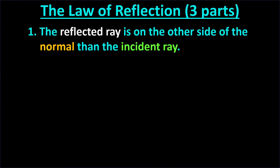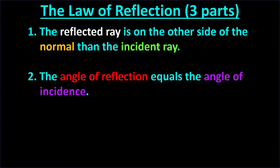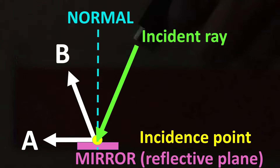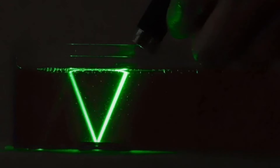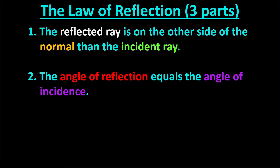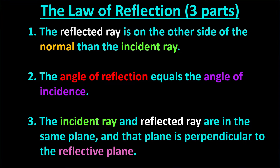Part 2 of the Law of Reflection states that the angle of reflection equals the angle of incidence. We measure the angle of incidence as being between the normal and the incident ray. In this case, it's 20 degrees. Then we draw in the angle of reflection, which is from the normal to the reflected ray. Its value must equal the angle of incidence according to the Law of Reflection. That means choice B is correct.